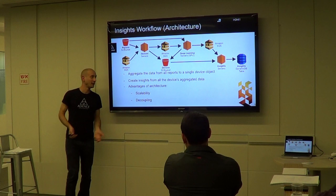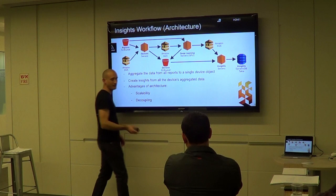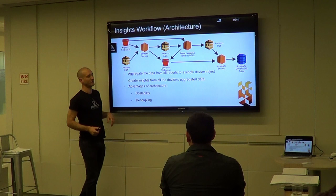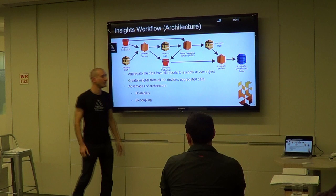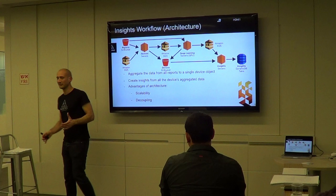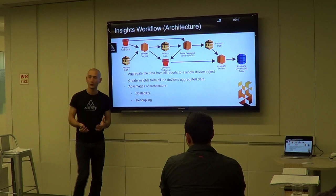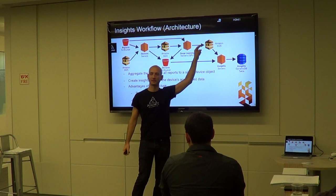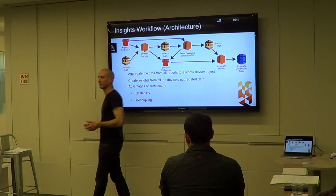The advantages of this complicated architecture are scalability - each server uses auto-scaling so they can grow and shrink dynamically - and more importantly, decoupling. For example, if we find a bug in the insights server code affecting 100,000 devices, we fix the code, deploy it, and just push the device identifiers to the SQS. The insights server scales if needed and recreates the insights for all those devices.